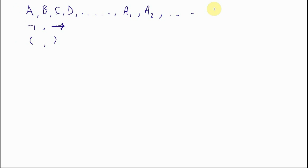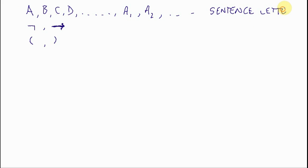Now let's just name these symbols. We are going to call the capital letter symbols sentence letters — attach no meaning to these at the moment, they simply denote those symbols. We'll call the other two symbols connectives. And we will call the remaining symbols parentheses.